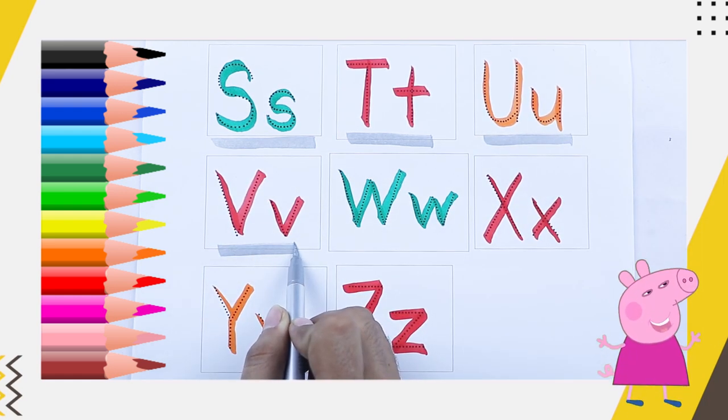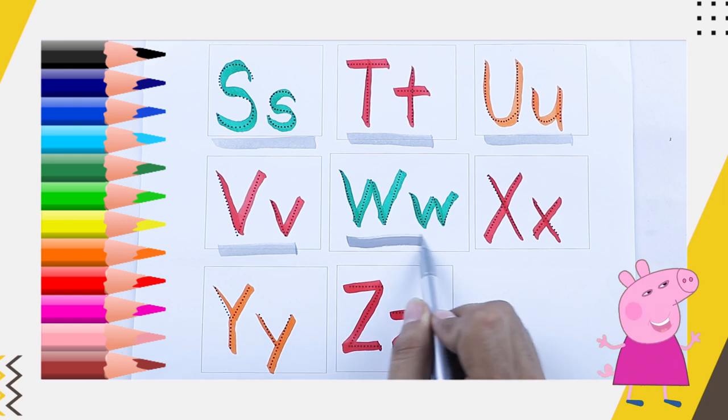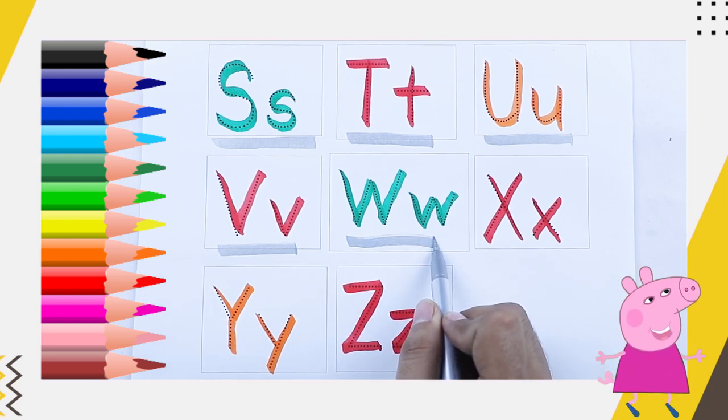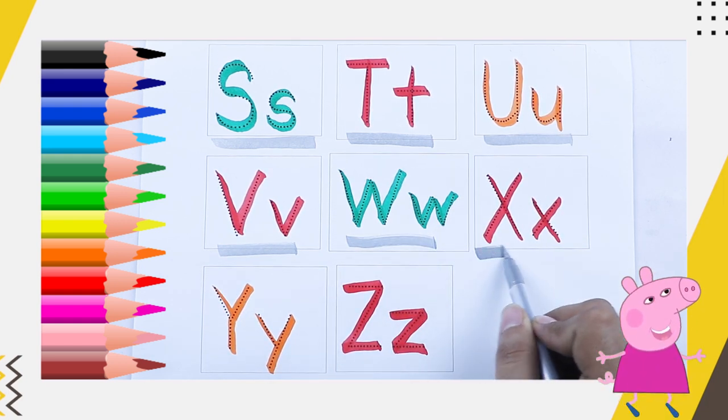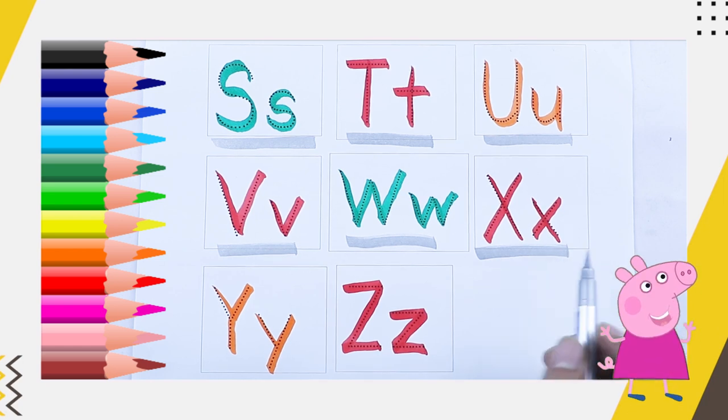Red color V, V for van, green color W, W for watch, red color X, X for Xmas tree.